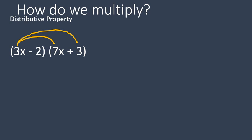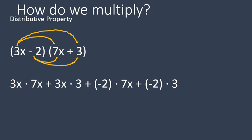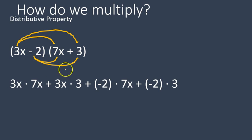I'll take my first term, 3x, and multiply that times everything inside the second set of parentheses: 7x plus 3. Then I take my second term, negative 2, and multiply that times everything inside the second set of parentheses. So the expanded line is: 3x times 7x, then 3x times 3, then negative 2 times 7x, and negative 2 times 3 — separating each multiplication with an addition symbol.